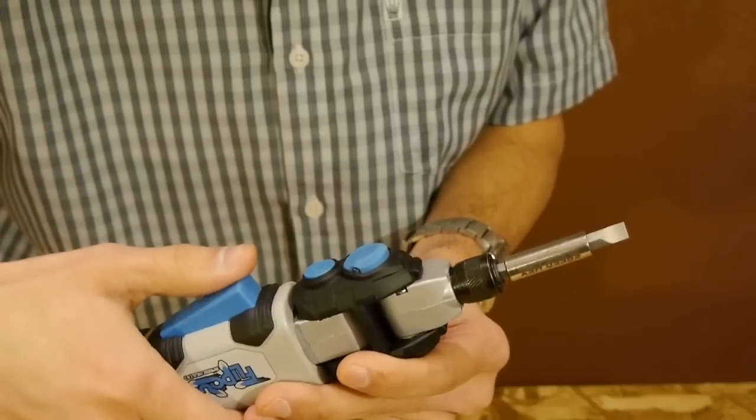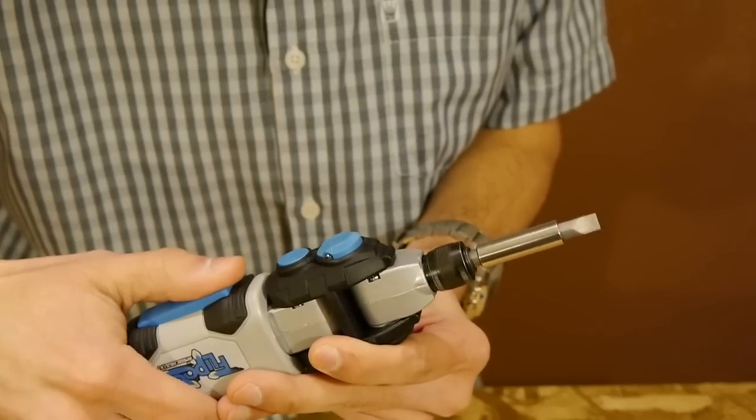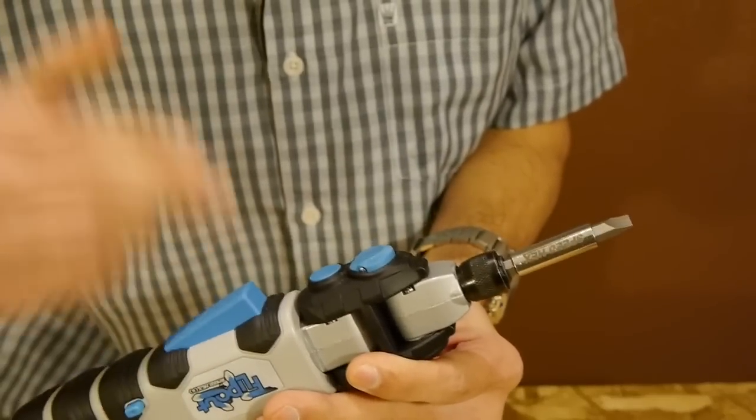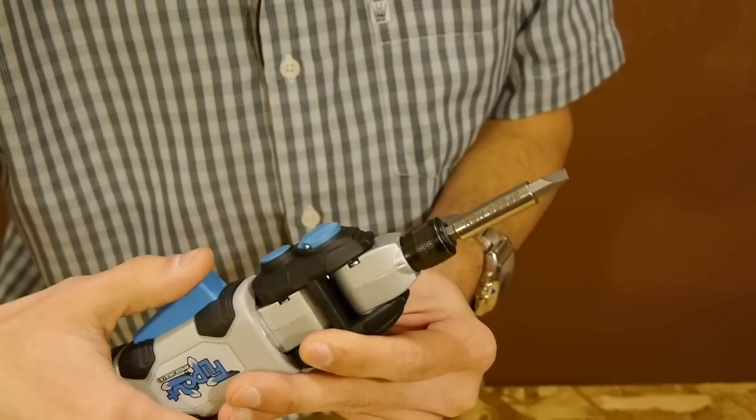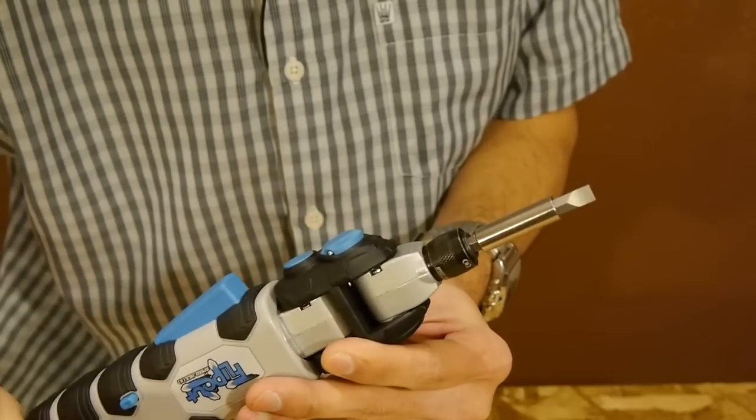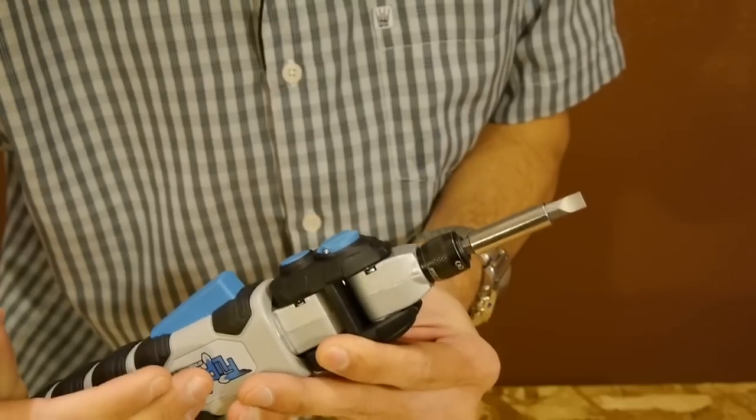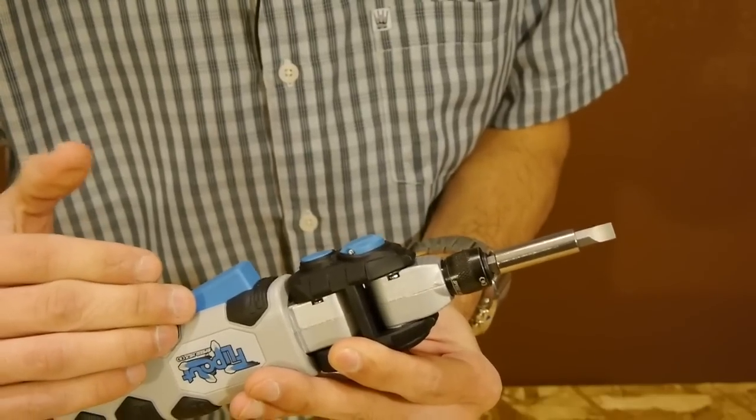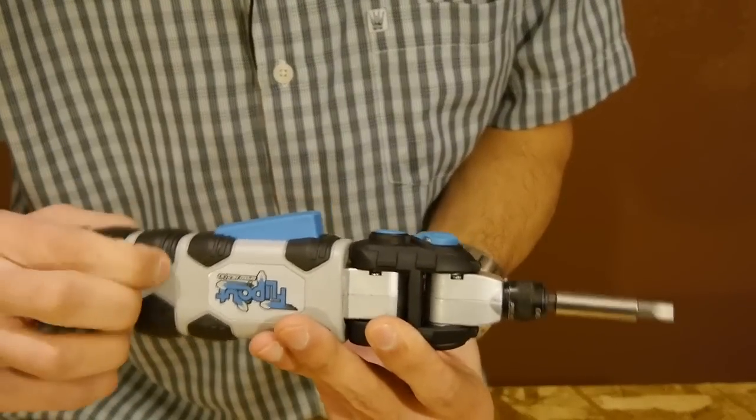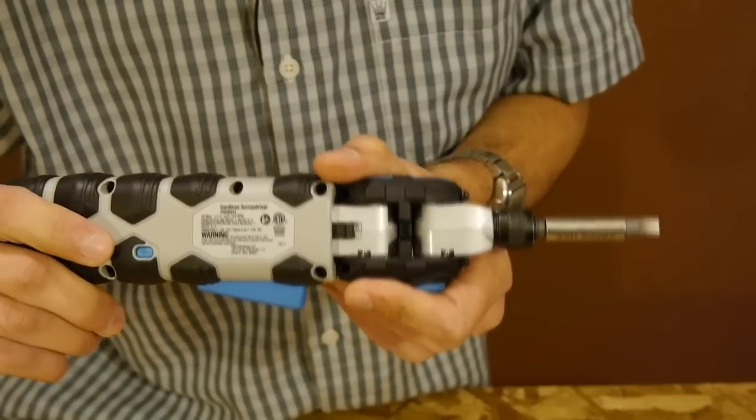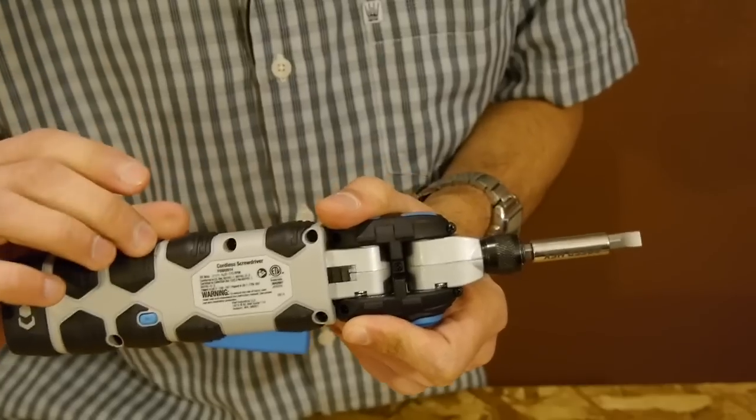It has a variable speed trigger so you can fine tune the speed you need to drive screws. Although it tops out at only 175 RPM which I thought could be faster, it'll get the work done but I'm used to faster screwdrivers. You can go in forward and reverse by pushing a button on either side, or keep it in the lock position so it doesn't accidentally turn on.